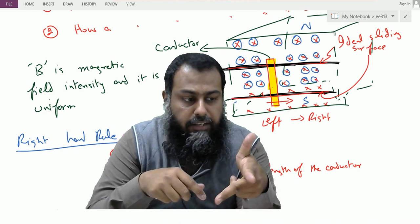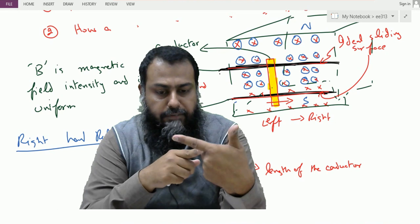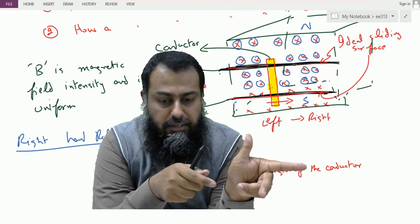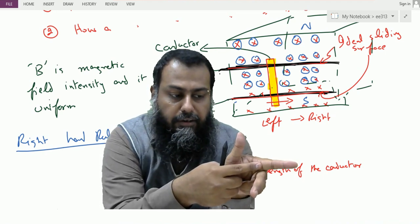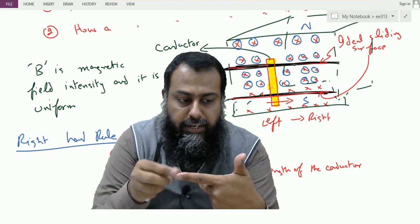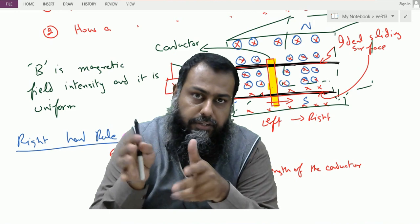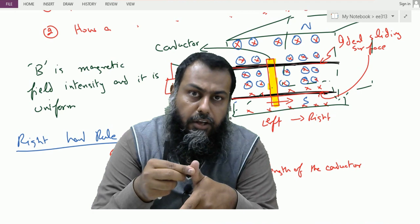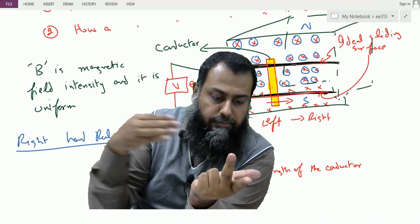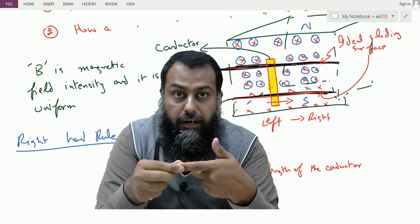The rule uses three fingers: the thumb, the index finger, and the middle finger, placed perpendicular to each other. The thumb shows the direction of movement of the conductor. Since the conductor is moving from left to right, the thumb points in that direction. The index finger points in the direction of the magnetic field lines.